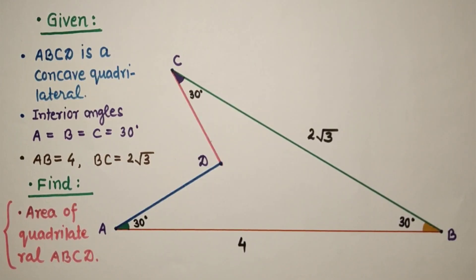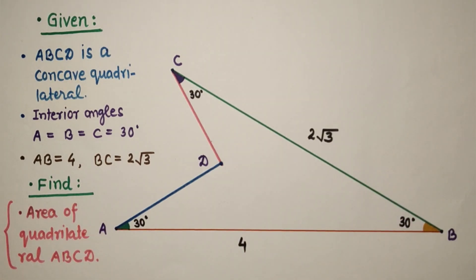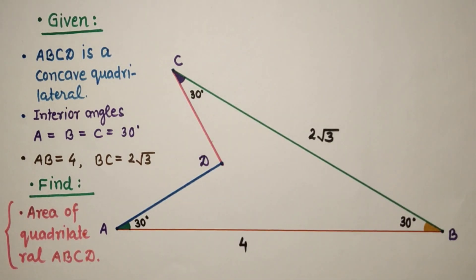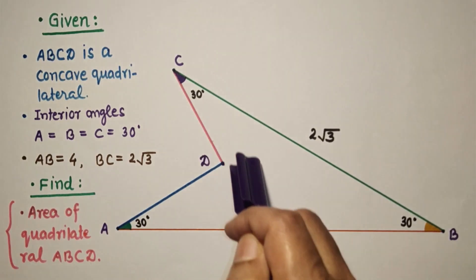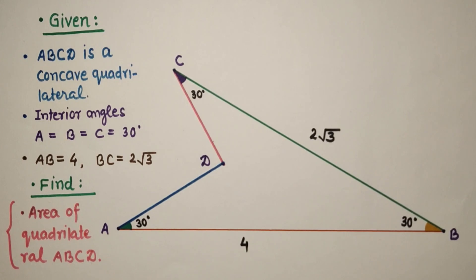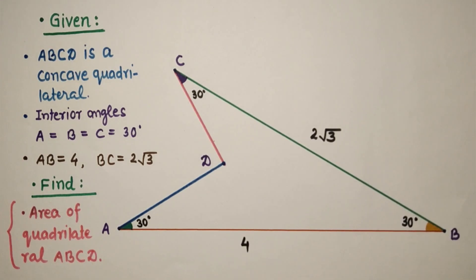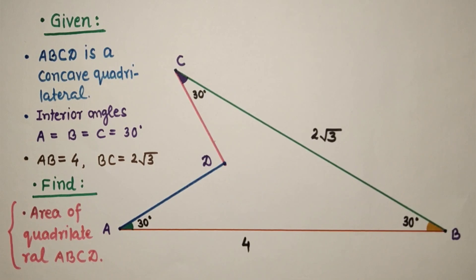Hello friends. Today we will discuss this question. We have to find the area of quadrilateral ABCD. We are given that this quadrilateral is concave, with one interior angle being a reflex angle, and all other three interior angles are 30 degrees each. Side AB is given as 4 units and CB length is 2 root 3 units. We have to find the area of this quadrilateral.